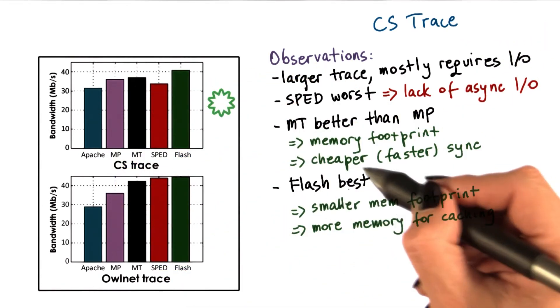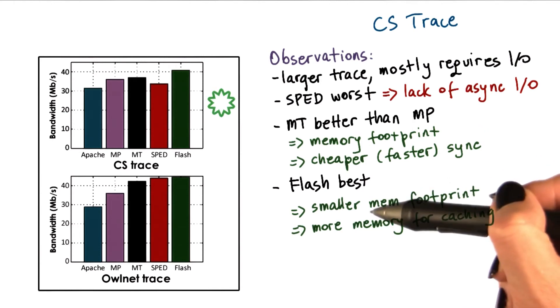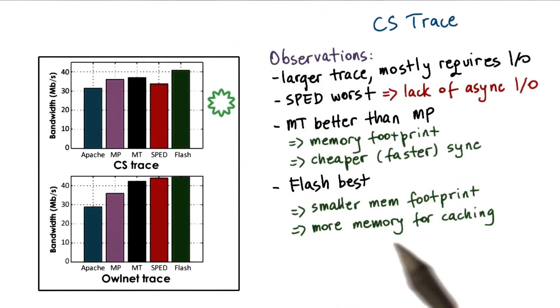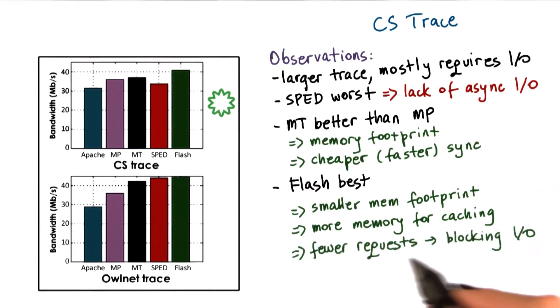In all cases, flash performs best. Again, it has the smaller memory footprint compared to the multithreaded and the multiprocess, and that results in more memory available for caching files or caching headers. As a result of that, fewer requests will lead to a blocking IO operation, which further speeds things up.